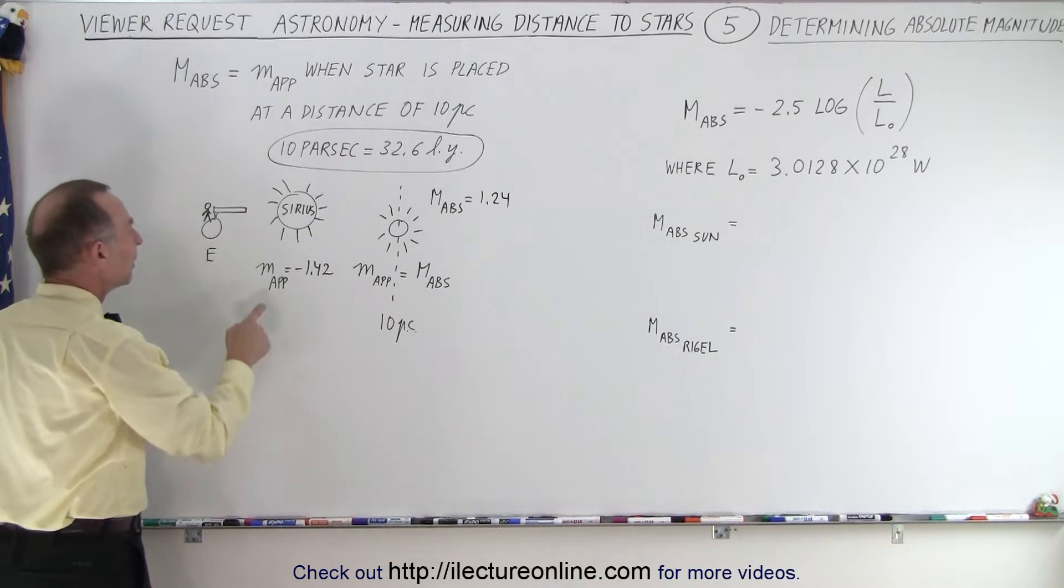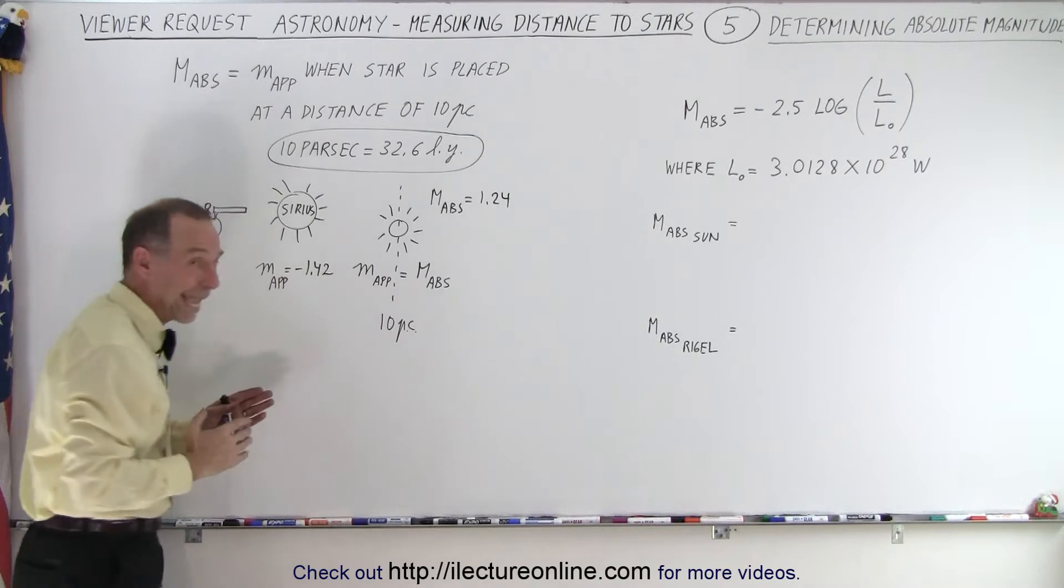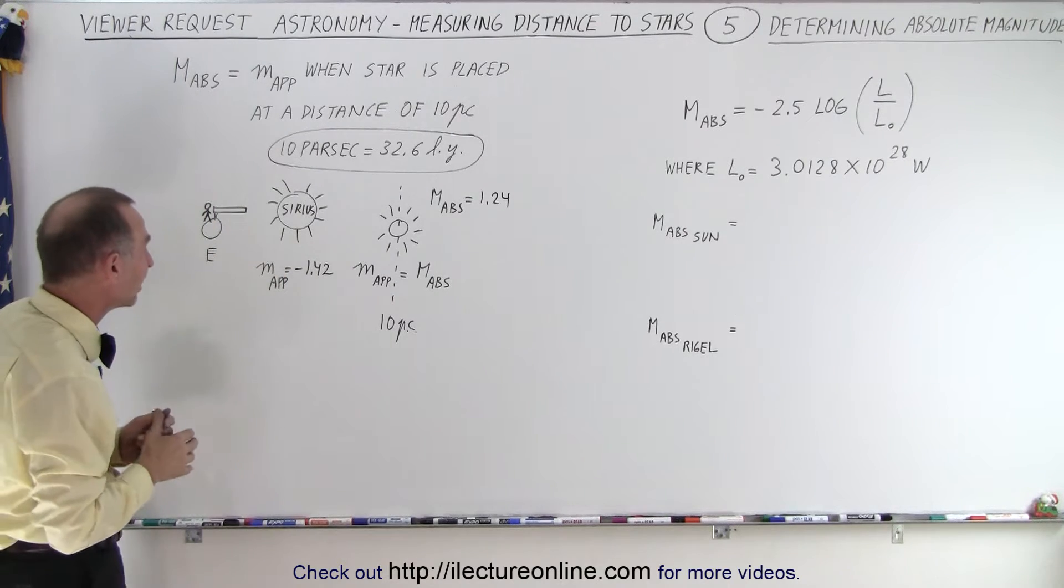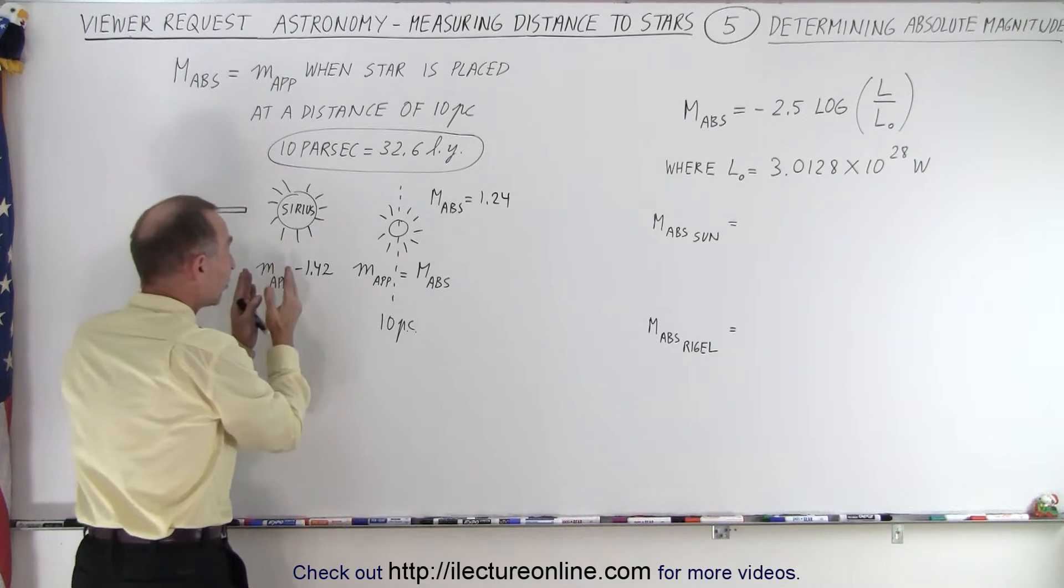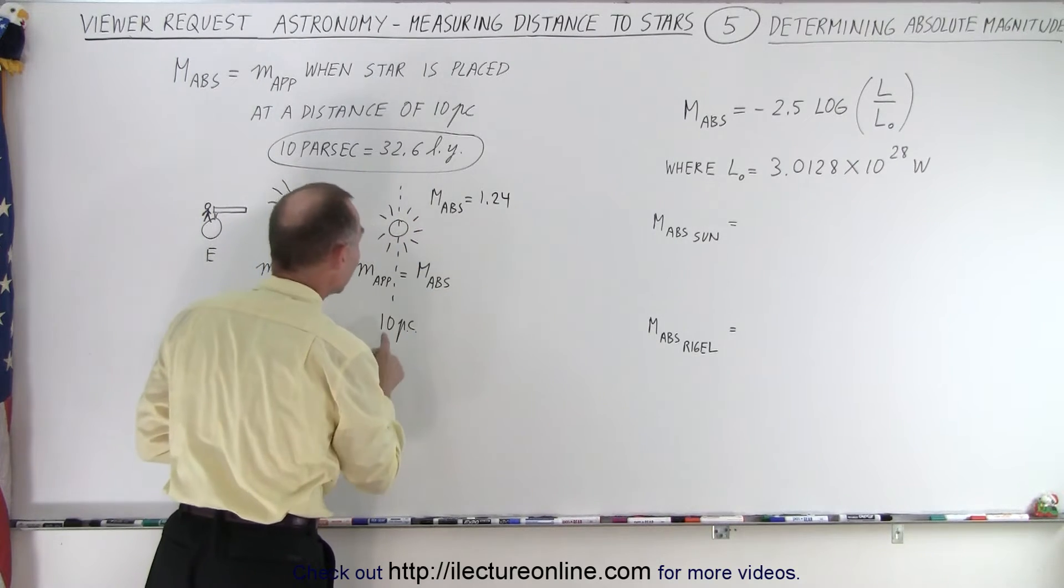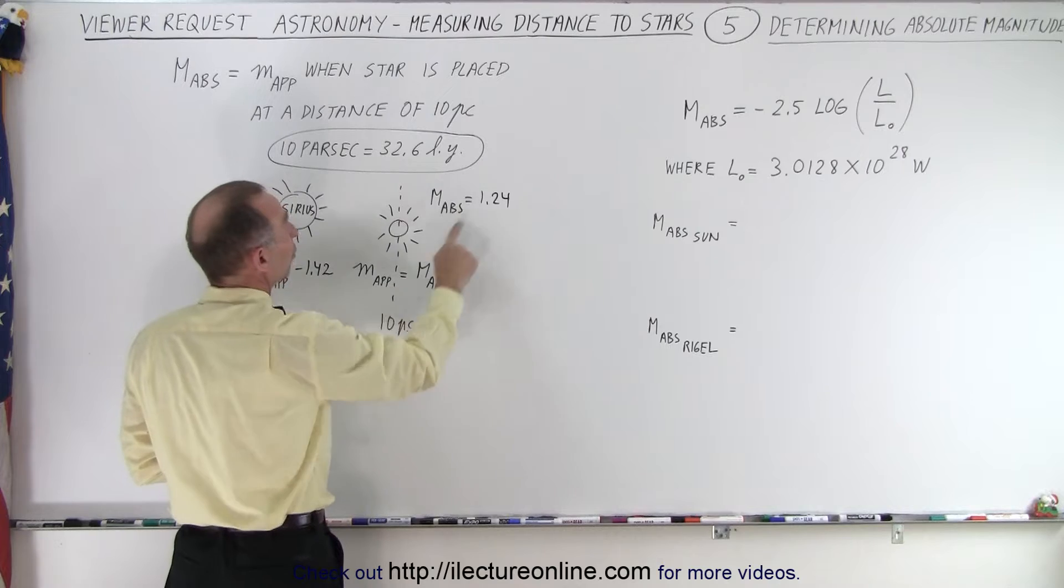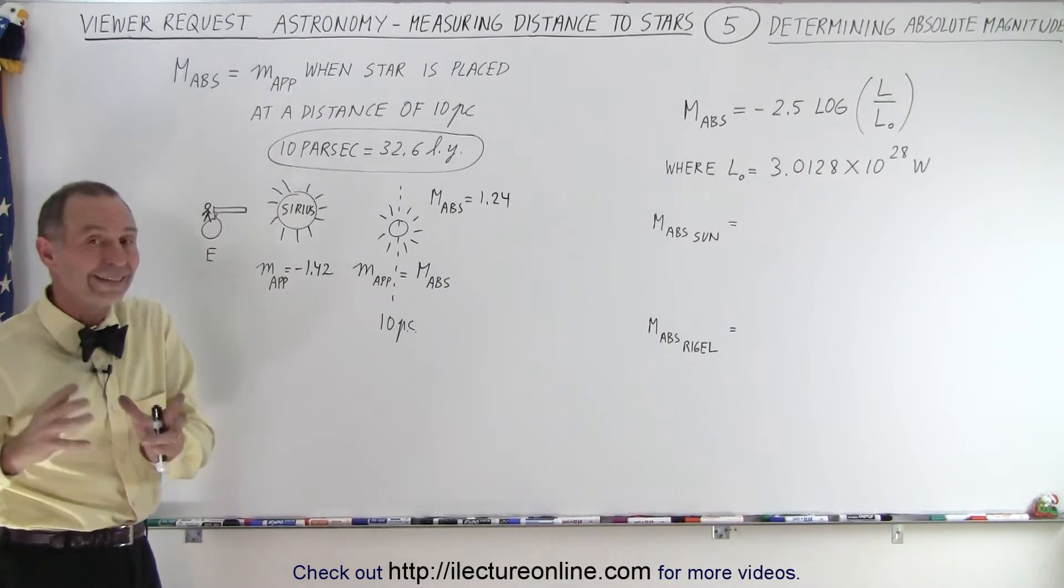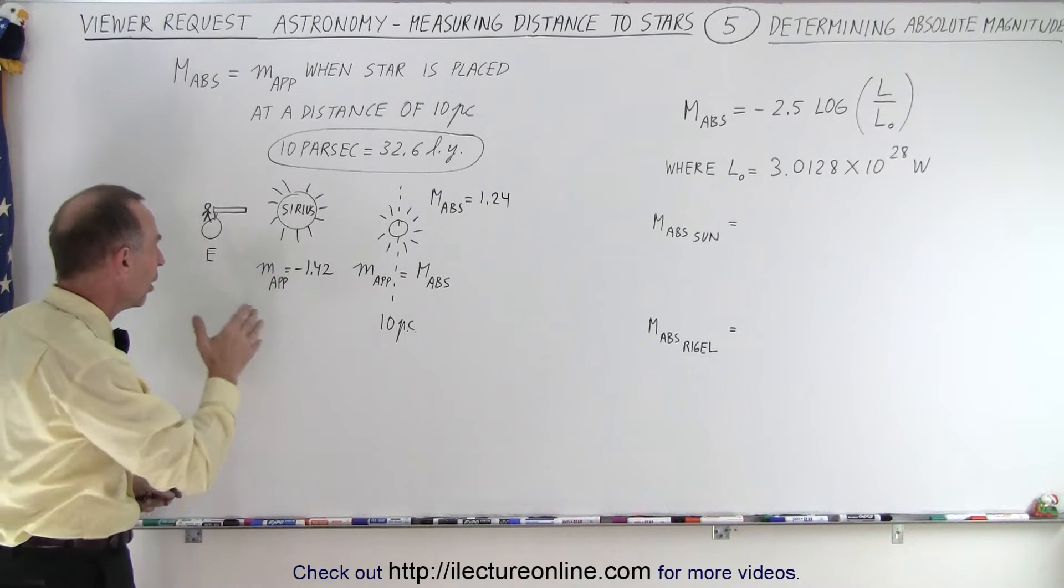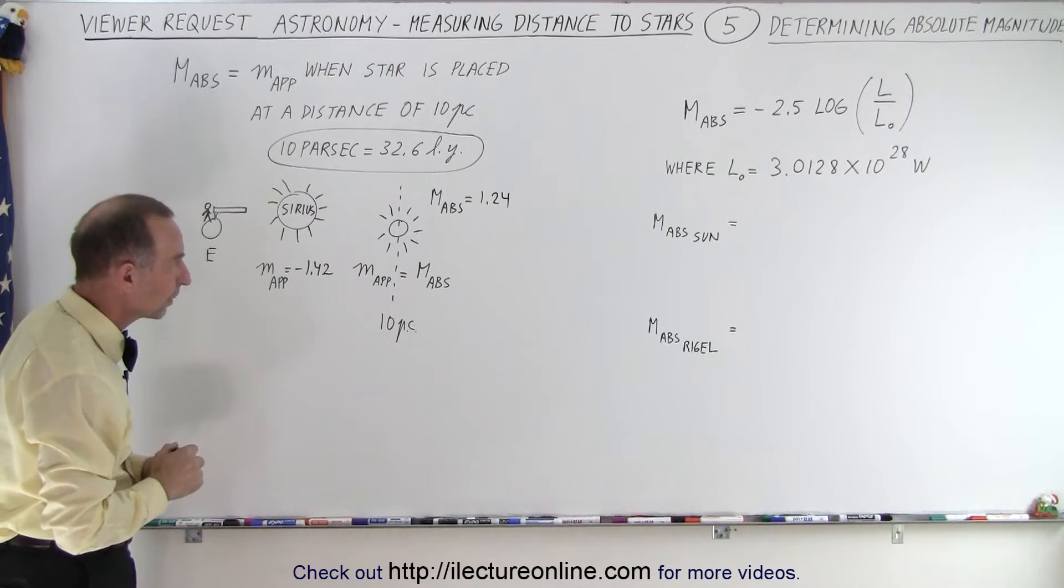As an example, the apparent magnitude of Sirius, where Sirius is currently at, which is somewhere around 8.5 light years, is a minus 1.42. But if we then take Sirius and put it 10 parsecs away, then the apparent magnitude would only read to be 1.24, a positive 1.24, which means that is the absolute magnitude of the star Sirius.